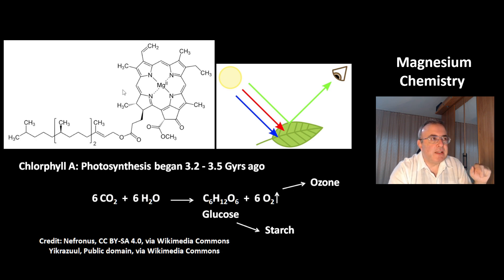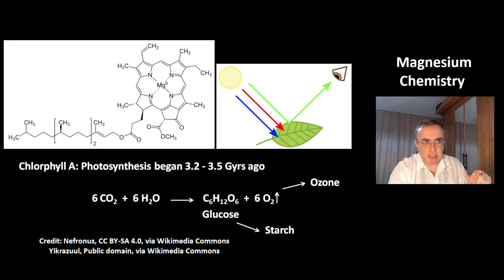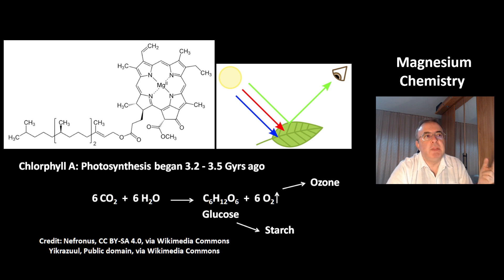At the left you can see the structure of chlorophyll A. It is a magnesium²⁺ complex. At the right, this picture explains why chlorophyll is green — because it absorbs red and blue light, but not green light. Green light is reflected, which is why it appears green.